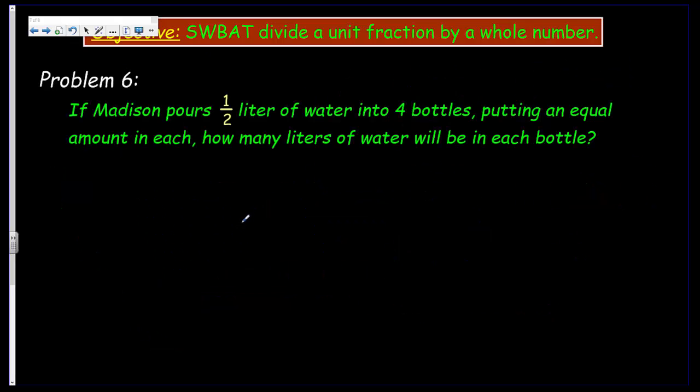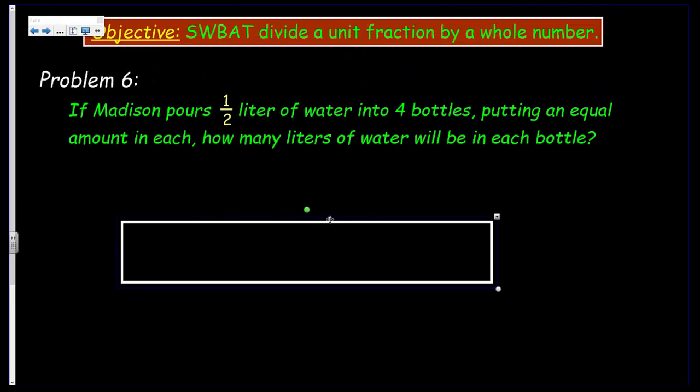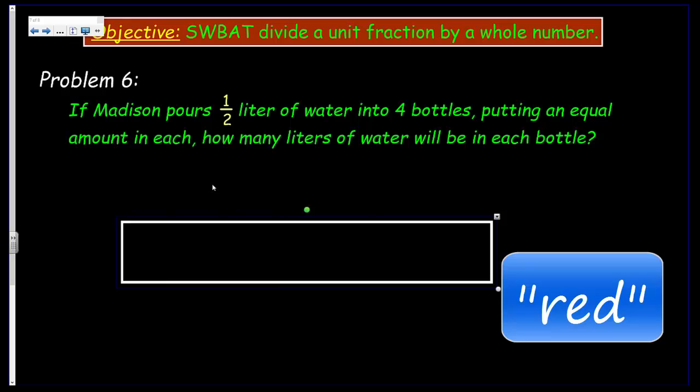Let's move on to problem six. If Madison pours one half liter of water into four bottles, putting an equal amount in each, how many liters of water will be in each bottle? We're going to go ahead and model our thinking again. First thing is we need to make sure that we read and understand the problem. How many liters of water does Madison have? She has a half a liter. That's all we have. A half a liter is being poured into how many bottles? Four. So how do we solve this problem? Well, we definitely have to divide, right? The division sentence should be one half divided by four. So I need to divide the dividend by one half by the divisor, which is four.